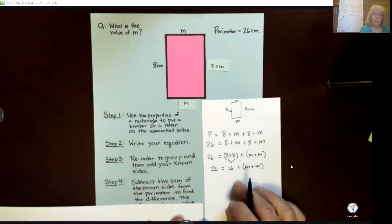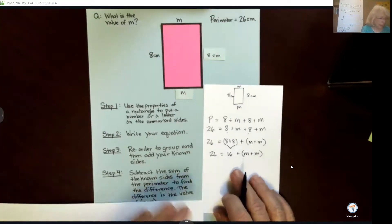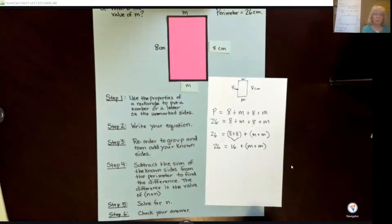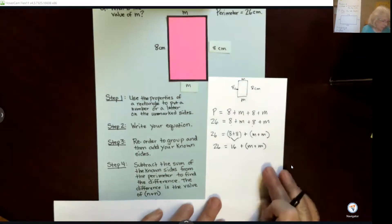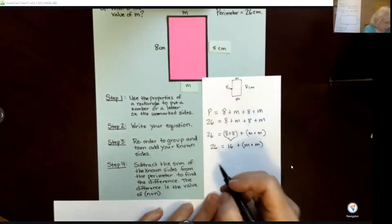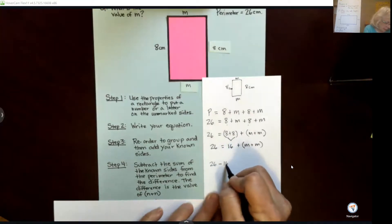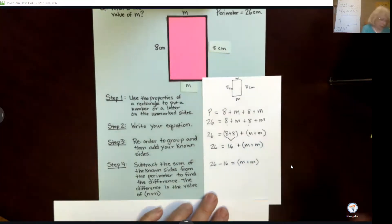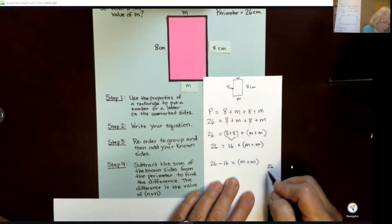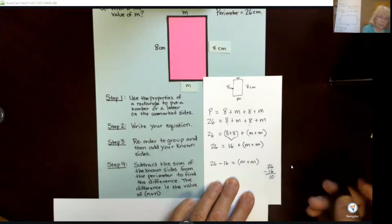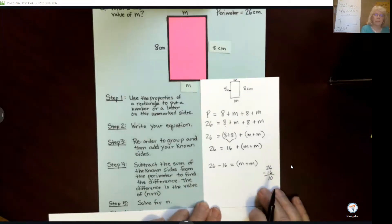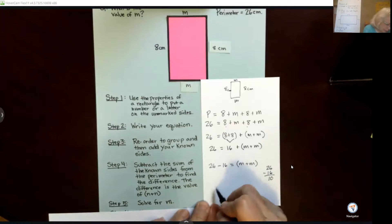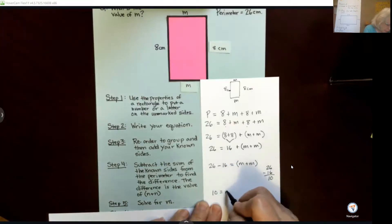Now this is a tricky part where we have to remember that we need to subtract in order to find the difference. So we're going to take 26 minus 16, which is going to give us a difference which is actually m plus m. So let's do that over here to see what 26 take away 16 is, and we get 10. So now we are going to try to solve for m in this case, and we have 10 is equal to m plus m.